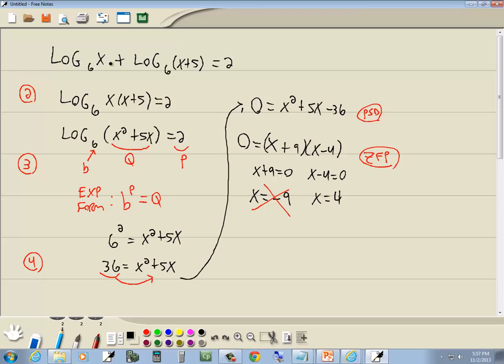If I plug 4 in, put 4 here, we've got log of 4, that's fine. Put 4 here, we've got 4 plus 5, which is 9, that's fine. Neither one is 0 or negative. So x equals 4 is our answer.